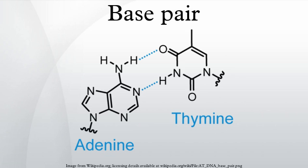The regular structure and data redundancy provided by the DNA double helix make DNA well-suited to the storage of genetic information, while base pairing between DNA and incoming nucleotides provides the mechanism through which DNA polymerase replicates DNA, and RNA polymerase transcribes DNA into RNA.